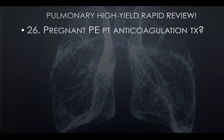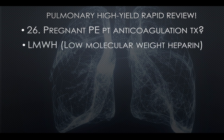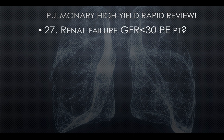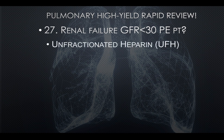Question twenty-five: Pregnant patient anticoagulation treatment for PE — use low molecular weight heparin. They'll list heparin, warfarin, and others; select low molecular weight heparin for pregnant patients with PE. Question twenty-six: For renal failure patients with GFR less than 30 and PE, treat with unfractionated heparin.